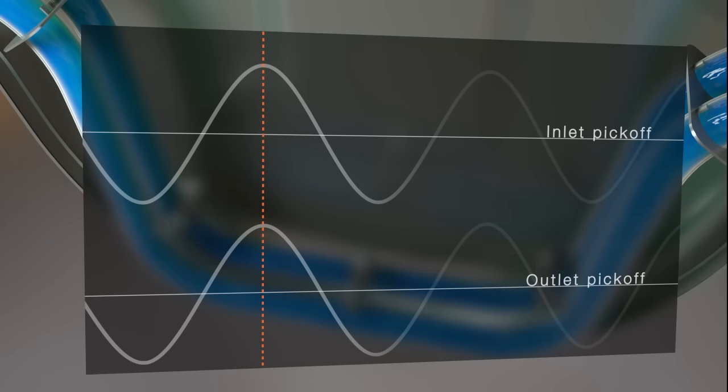The sine waves generated indicate the motion of one tube relative to the other. When there is no flow, the inlet and outlet sine waves are in phase, meaning they are in a synchronized motion.